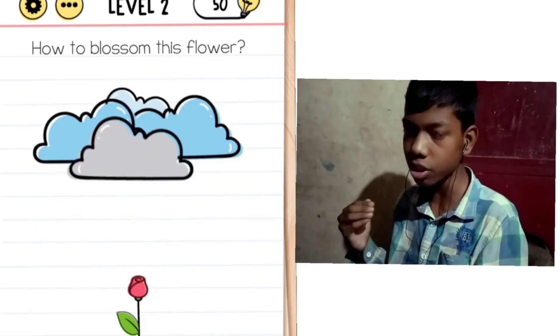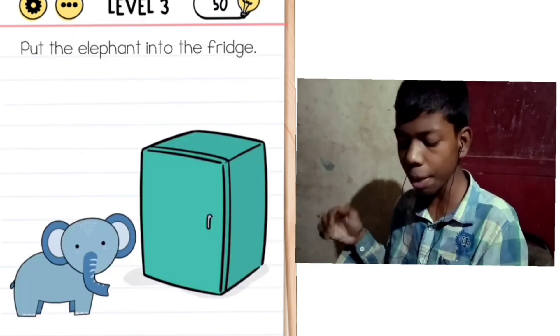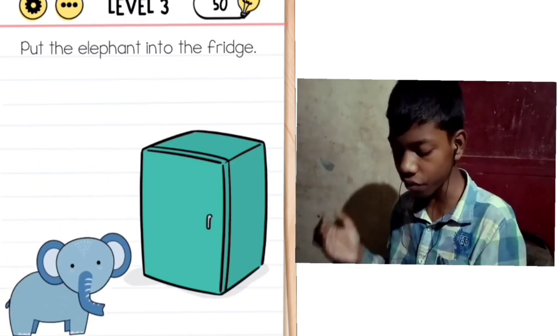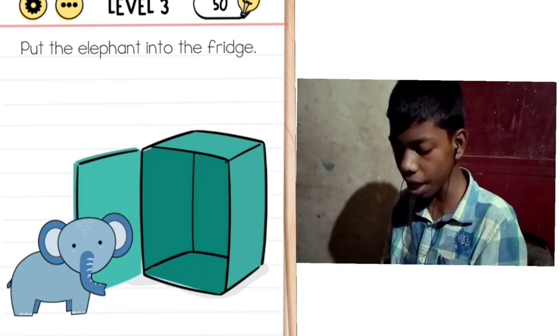Level 2: How to blossom this flower? Here we have a flower which we have to grow or blossom. We see the clouds. Level 3: Put the elephants in the fridge. We have to open the door and take the elephant and put it in.